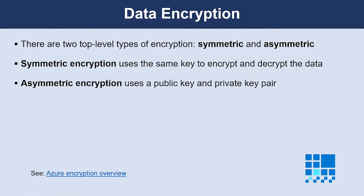To use or read the encrypted data, it must be decrypted, which requires the use of a secret key. There are two top-level types of encryption: symmetric and asymmetric. Let me explain these two options in detail.